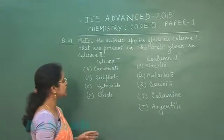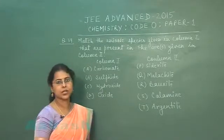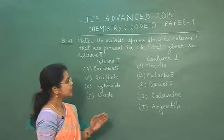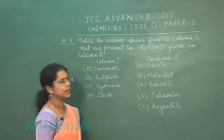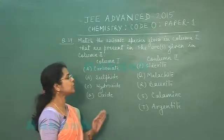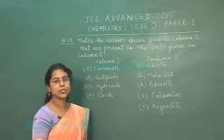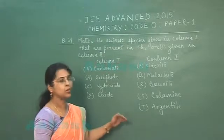The ores are given: carbonate, sulfide, hydroxide, oxide, and in column 2: siderite, malachite, bauxite, calamine, argentite. To do this matching, we need to know the formula of these ores.